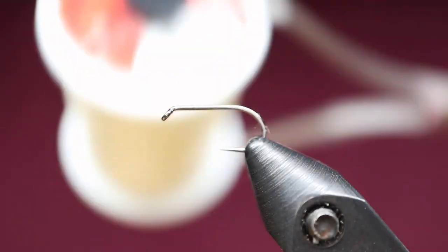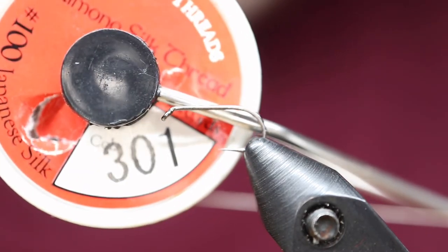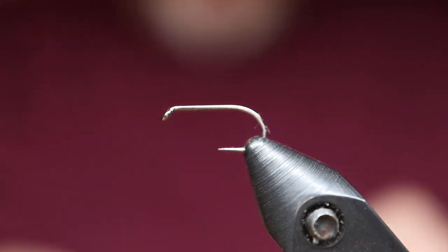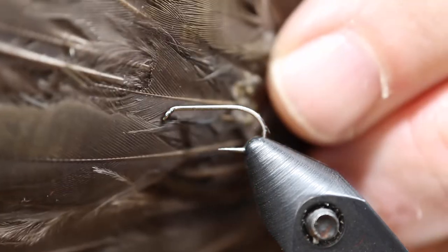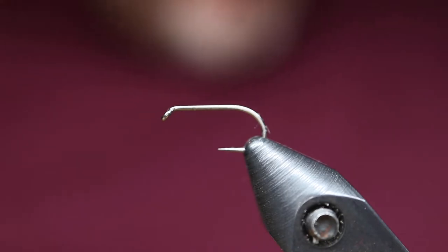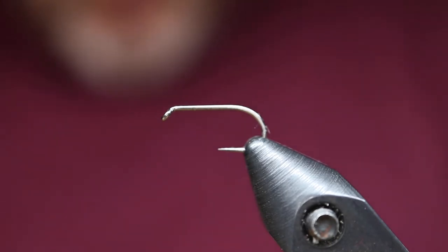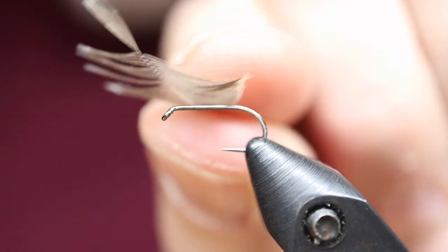That's a partridge hook, size 14, dry fly hook, kimono silk in number 301 primrose yellow, waterhen wing, and we're going to use the undercovert, which is one of the small feathers on the underside. It looks like that.